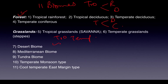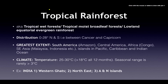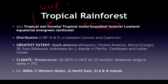Then we have desert, Mediterranean, tundra, temperate monsoon, and cool temperate east margin biomes. Tropical rainforests are also called tropical wet forest or tropical moist broadleaf forest — this is the WWF classification. They are also called lowland evergreen rainforest because they lie near the equator and are evergreen — there is no leaf-falling pattern.